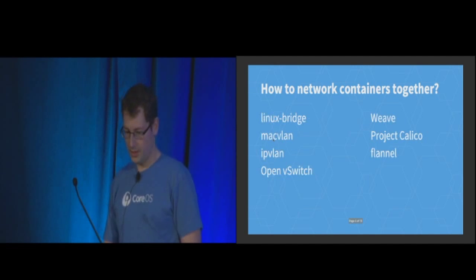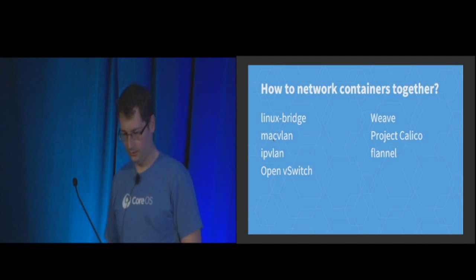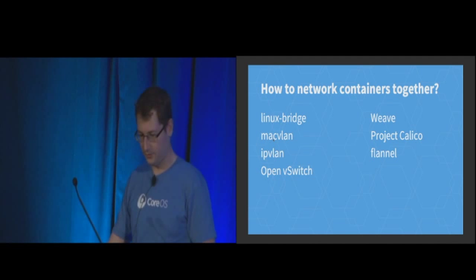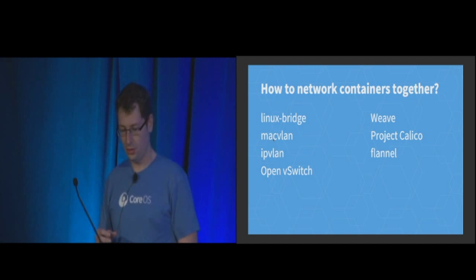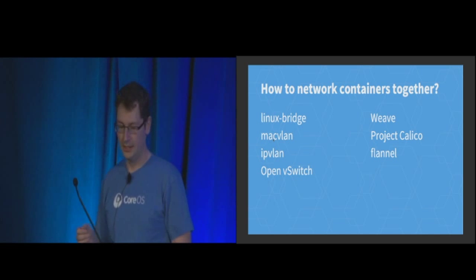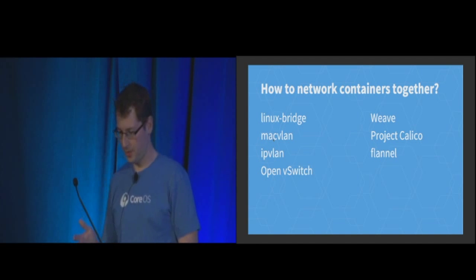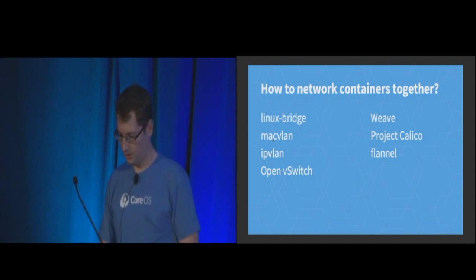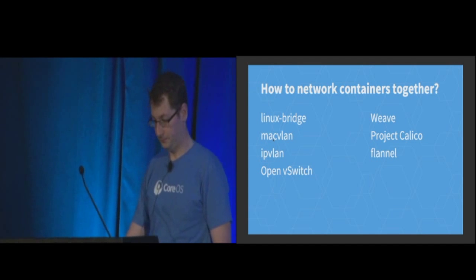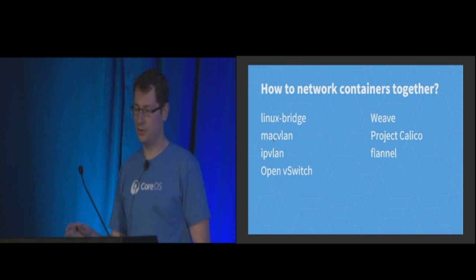There are lots of ways to virtualize the network. Stuff on the left is more or less the low-level bits that ship with the Linux kernel — things like the Linux bridge that Docker uses, that's the docker0 you see. MacVLAN and IPVLAN can enslave your host NIC and virtualize it at that level. There's Open vSwitch. And there are also all sorts of container SDNs that popped up in the last couple of years, including Weave, Project Calico, and Flannel — that's the one Kelsey mentioned that I worked on.